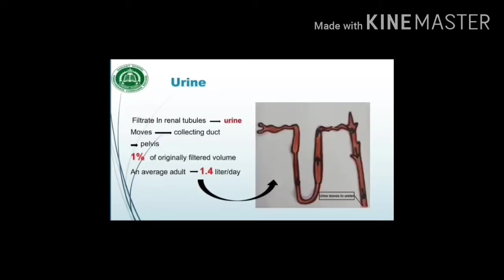The filtrate present in the renal tubule is now urine. It moves to the collecting ducts and then to the pelvis, as shown in the diagram. The direction of the arrows shows the movement of urine towards the ureter. At the final stage, urine is only 1% of the originally filtered volume.